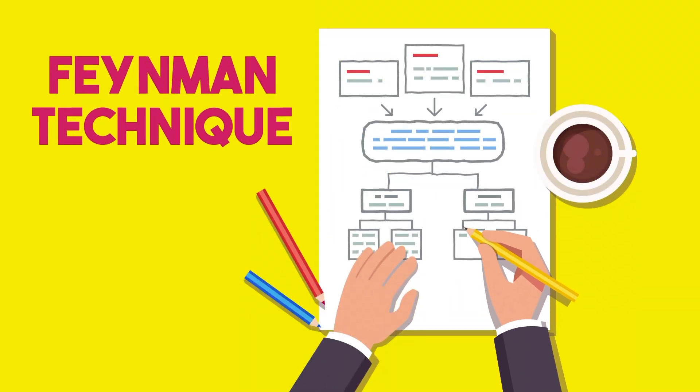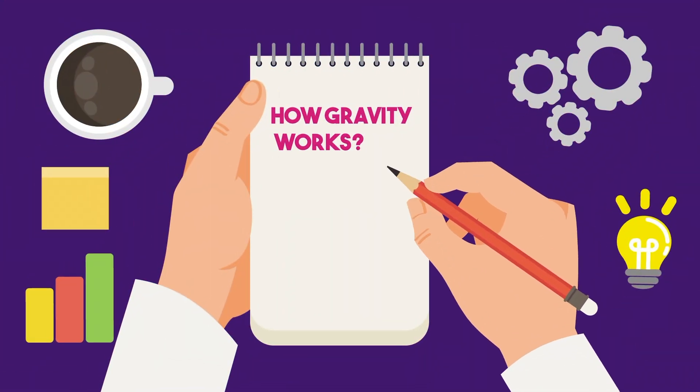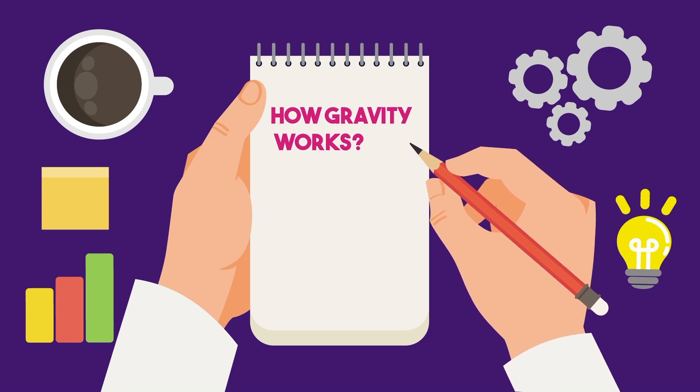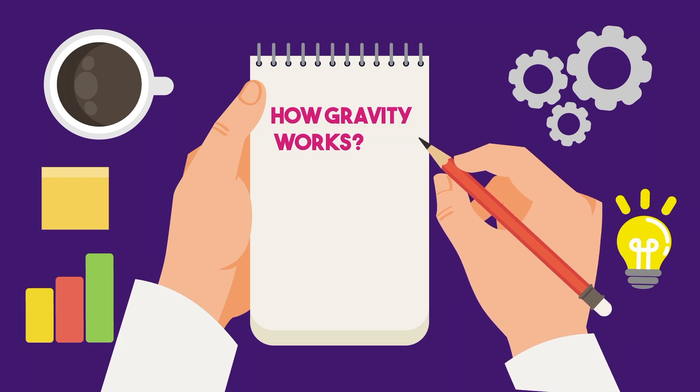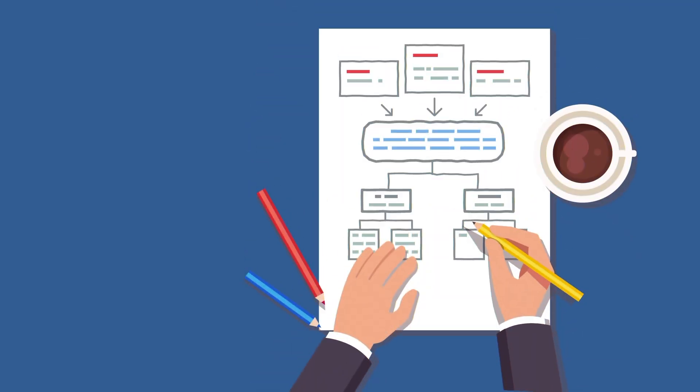You may discover that one Feynman technique branches into another. As you're investigating gravity, for example, you find out that you don't quite understand what mass is, either. So you start from step one. Write 'what is mass' at the top of the page, and then you try your hand at a simple explanation. And just like that, the Feynman technique connects and branches into a web of explanations. If you can explain and define every concept in that web, then you've moved one big step closer to mastering your subject.